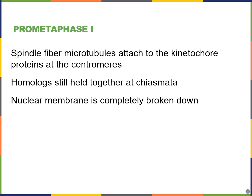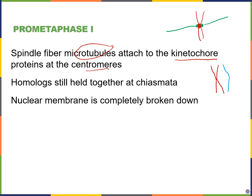Prometaphase I is similar to prometaphase of mitosis. Here we have spindle fiber microtubules attached to the kinetochores at the centromeres. The centromere is in the center, kinetochore proteins are just outside it, and the spindle fibers attach to those. This is true for homologous chromosomes — the homologues are still attached to one another, especially at the chiasmata. By the end of prometaphase I, the nuclear envelope will be completely broken down.